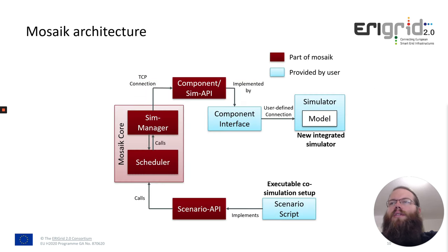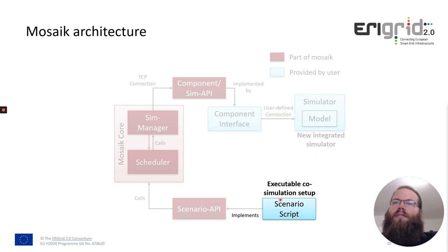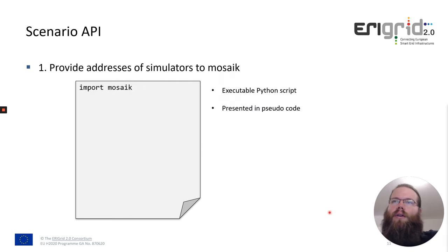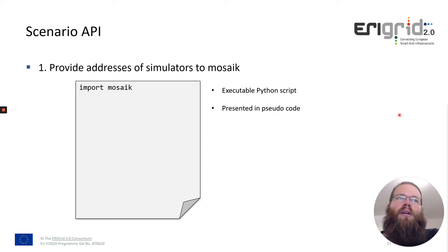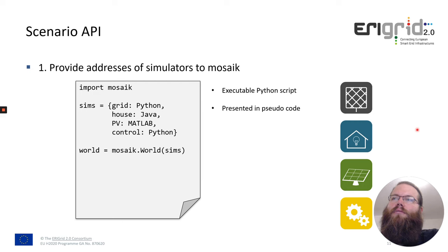Now I would like to go a bit more into detail about the scenario API and the scenario script. With the scenario script we can define which components should be started and how they should be connected to execute a co-simulation. The script is written in Python, though here it is shown as pseudocode. First we import Mosaic and then start our simulators, which calls the init function of the simulators. Our simulators here are a grid, a house, a PV, and a controller, implemented in different programming languages: Python, Java, Matlab, and Python again.